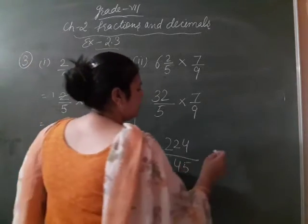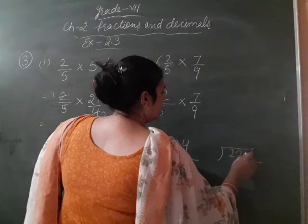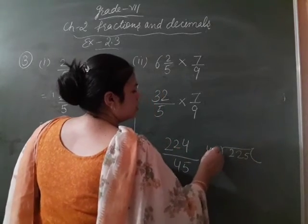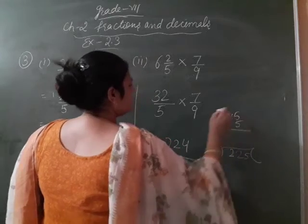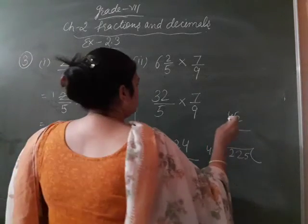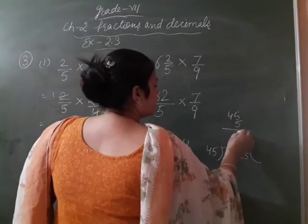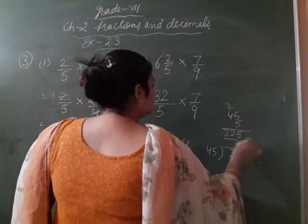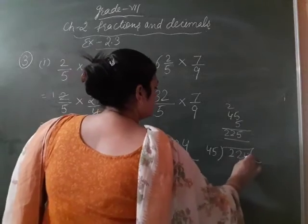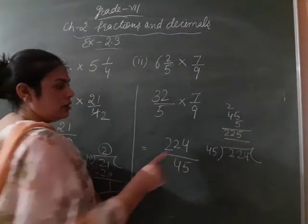Now, convert into mixed fraction, 225, 45. So, now 45, 5, 5's are 5, 5's are 25, 2 carry, 5, 5's are 5, 4's are 20, 20 and 2, 22. So, this is greater than this.